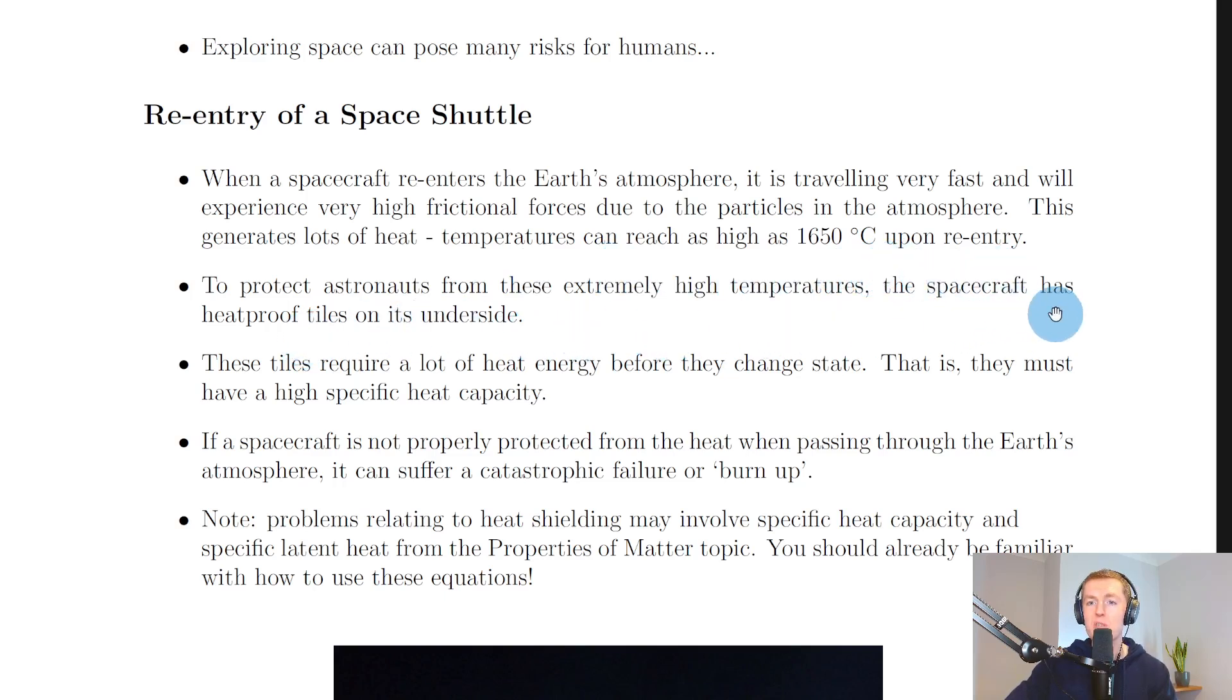Temperatures can reach as high as 1650 degrees Celsius upon re-entry. To protect astronauts from these extremely high temperatures, the spacecraft has heatproof tiles on its underside. These tiles require a lot of heat energy before they change state.